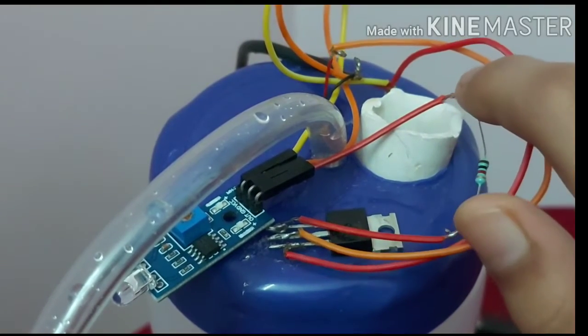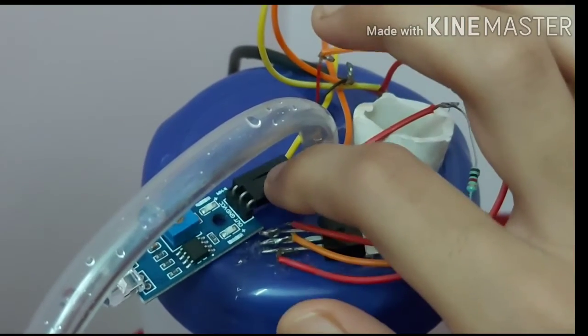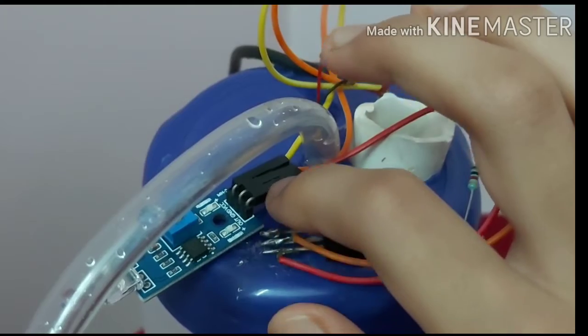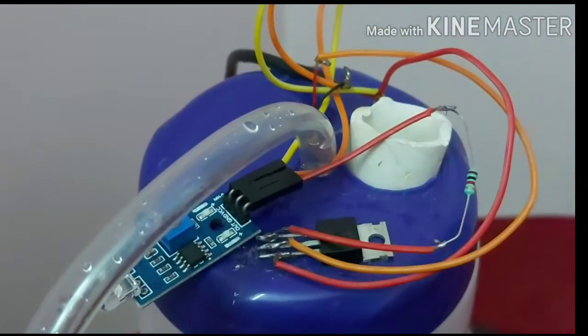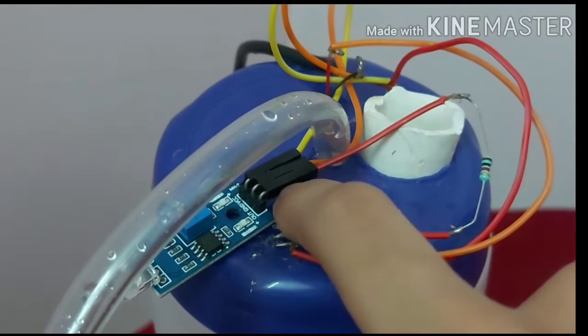And then we have to solder another wire to this point of the resistor and connect it to the output pin. This is the output pin - you can see OUT, output pin. Base, resistor to output.